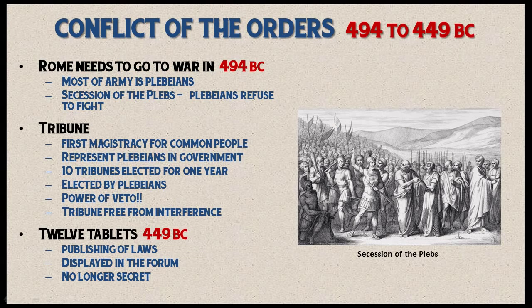Let's move to the timeline of events that shaped the classes of Rome. This period is called the Conflict of the Orders. The first major event occurred in 494 BC, when Rome needed to go to war against several of the surrounding tribes.